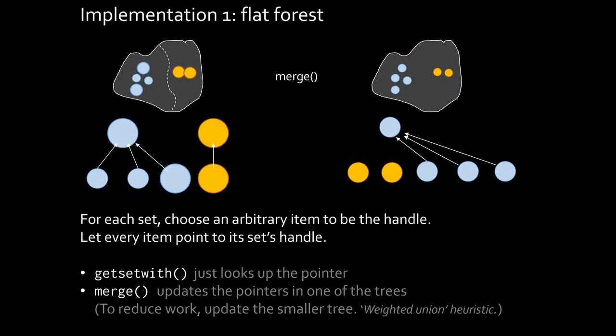If I want to merge two sets, then I'll take one of the sets and I'll update all the parent pointers for each of its elements and make it point to the root of the other tree. An obvious heuristic to improve performance is to keep track of the size of each of the sets. And when we're deciding which set we'll update the pointers in, update the pointers from the smallest set. That reduces the amount of work we have to do. This is known as the weighted union heuristic.